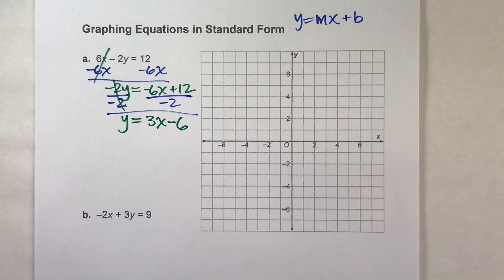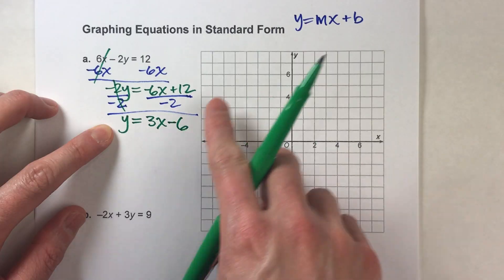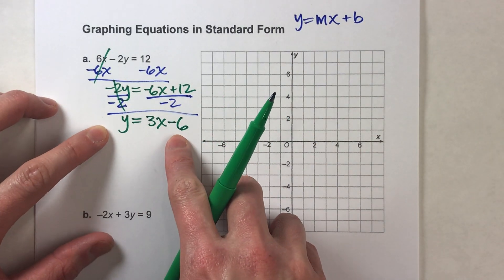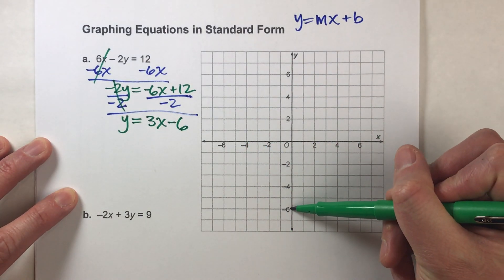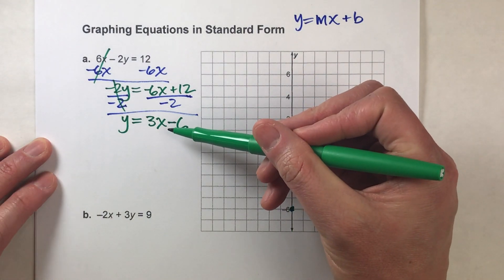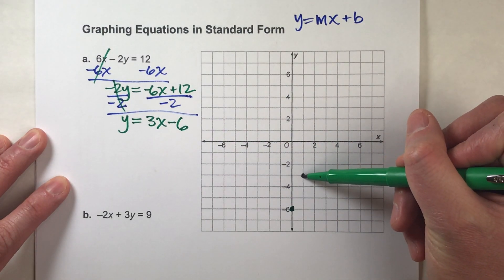Alright, now notice I've got my equation in slope-intercept form now. It looks just like this. My slope is 3, my y-intercept is negative 6, and now I can graph this. Negative 6 on the y-axis is right here. My slope is 3, or 3 over 1, so it's going to go up 3, right 1. Plot a point.